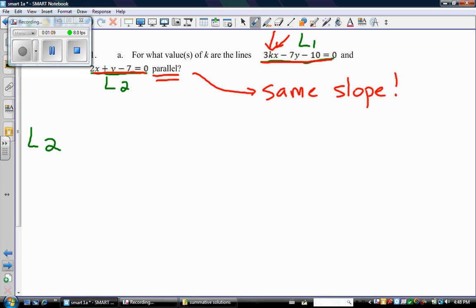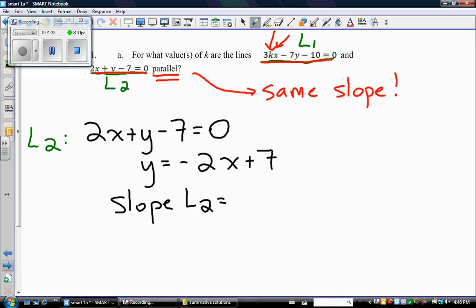A little easier because it doesn't have that k in it. So line 2 says 2x plus y minus 7 equals 0. And I need the slope of that line. So I'm just going to rearrange it into slope-intercept form. There it is, that was pretty fast. So now I know that the slope of line 2 is negative 2.